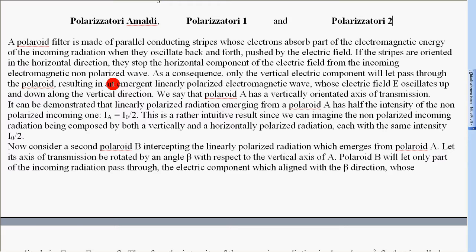This results in an emergent linearly polarized electromagnetic wave whose electric field E oscillates up and down along the vertical direction. We say that polaroid A has a vertically oriented axis of transmission.